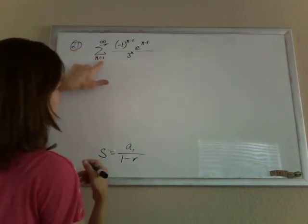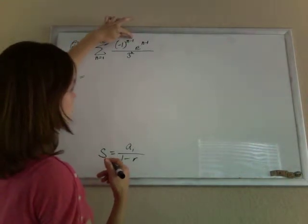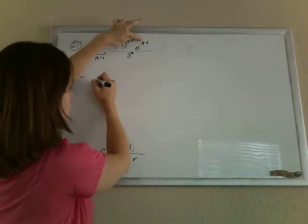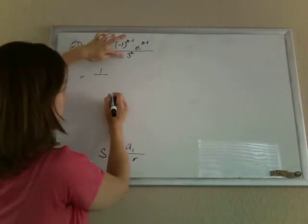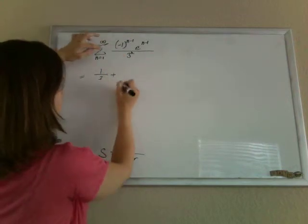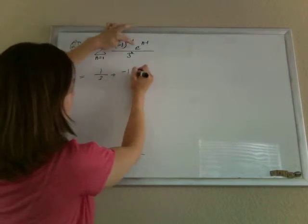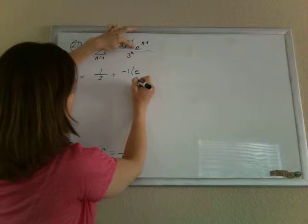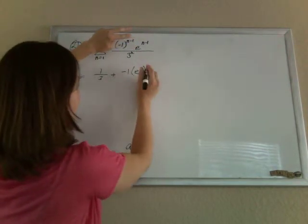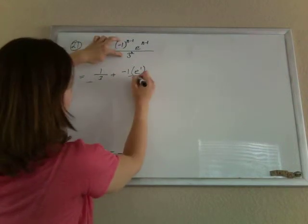So we'll start by plugging in the 1, and so we'll have negative 1 to the 1 minus 1. So 1 minus 1 is 0, so that's just a 1. e to the 0 is a 1, so we're going to go 1 on top, 3 to the 1 is 3. Now we'll plug in a 2. 2 minus 1 is 1. Negative 1 to the 1 is negative 1. e to the 1, all over 3 squared.